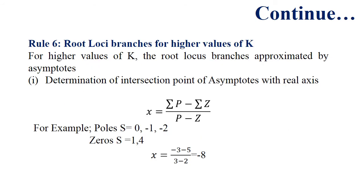We can find out the breakaway point by differentiating the open-loop transfer function with respect to S and then equating it to zero. As the value of K increases, the root locus will move away from the poles and zeros of the network. For high values of K, the root locus branches are approximated by asymptotes, which are curves where the curve basically touches the real axis.